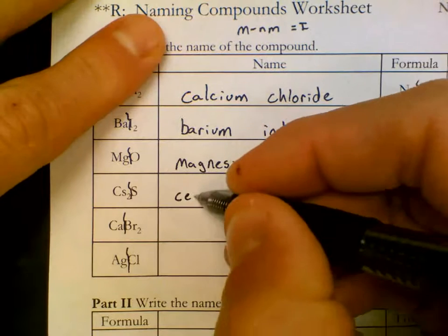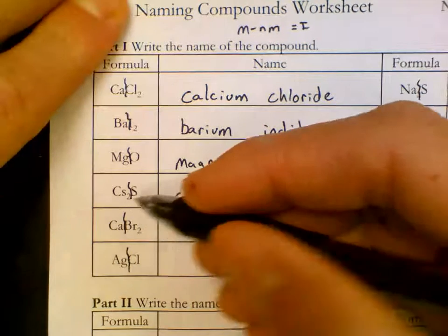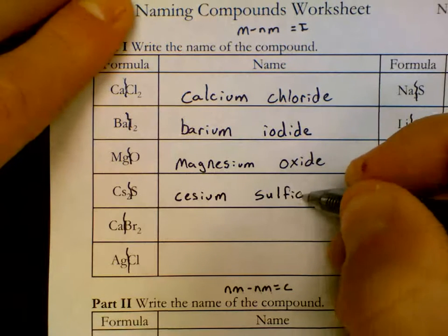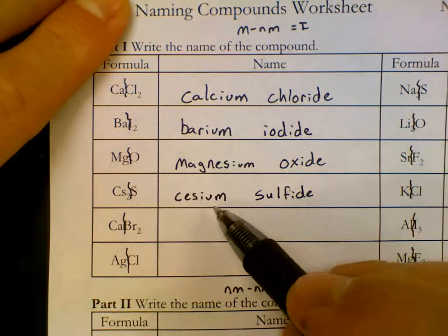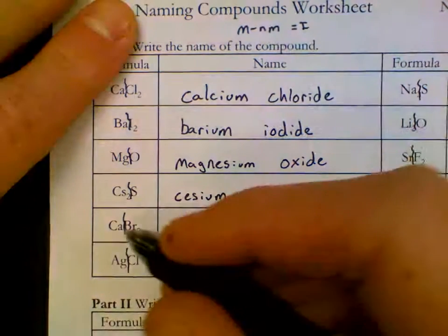Cs is cesium. Now that's the one that we don't use often, but you can look up that symbol. Again, we don't care about the subscript. Look up that symbol on the front of your periodic. Cs is cesium. Since we don't change the name, just write it down. S is sulfide. Sulfur to sulfide.